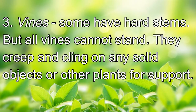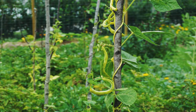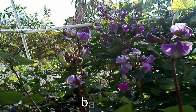Some vines have hard stems, but all vines cannot stand on their own. They creep and cling on any solid objects or other plants for support. An example of a vine with a hard stem is bataw.